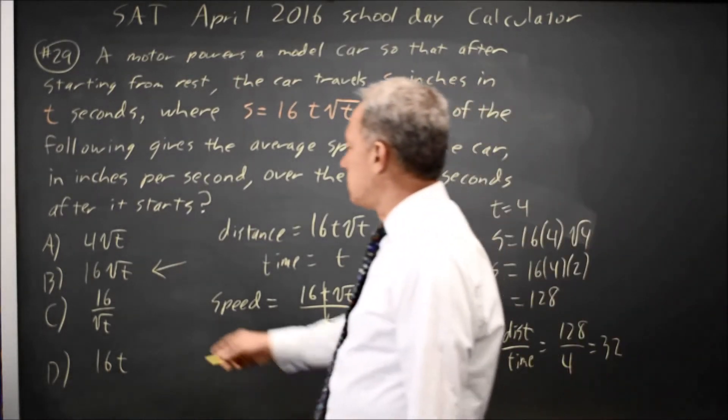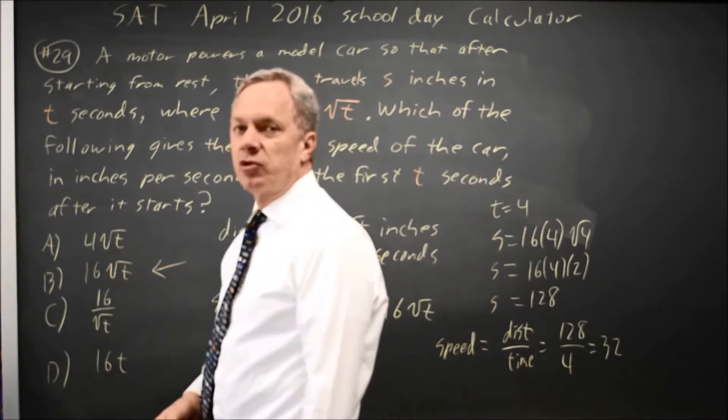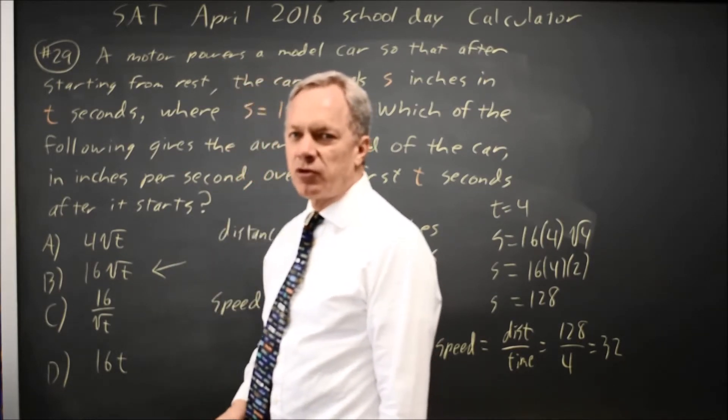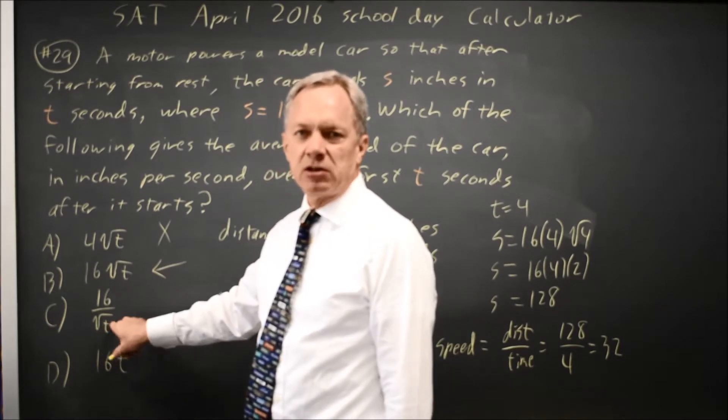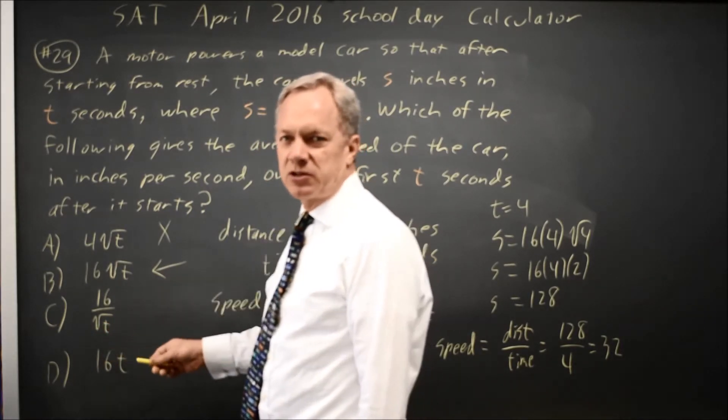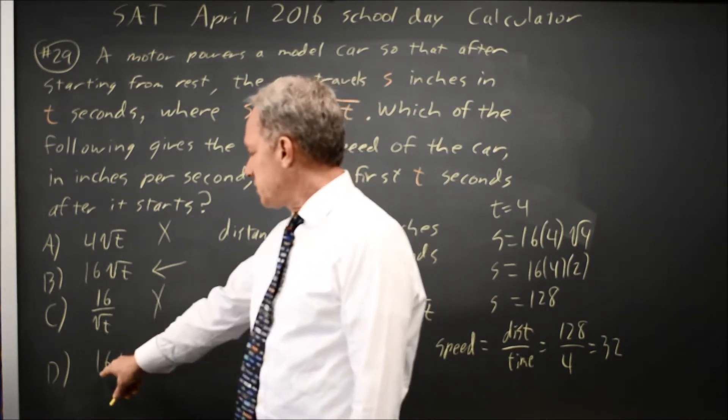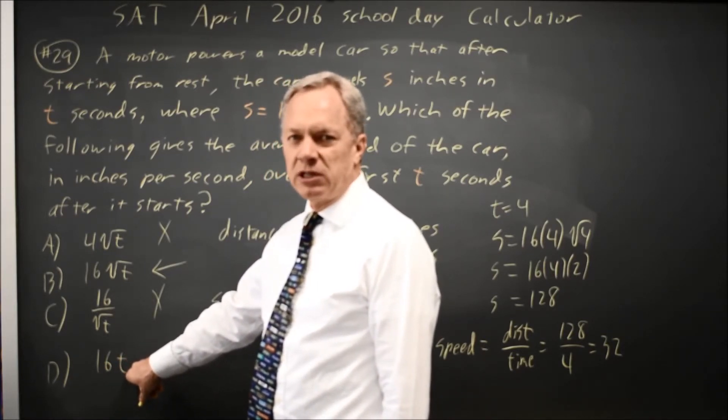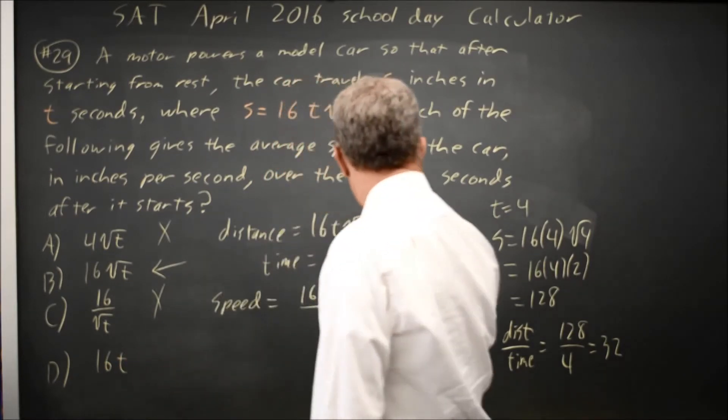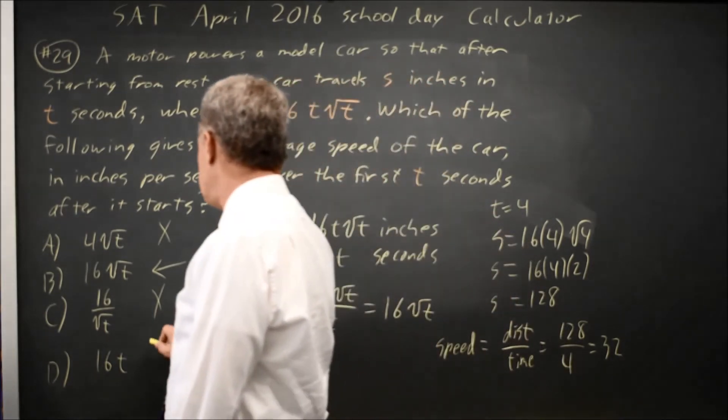Trying these, 4√2 is 4 times the square root of 4, which is 4 times 2 is 8, that doesn't work. 16 over √2 is 16 over 2 is also 8, still doesn't work. And 16 times t is 16 times 4 is 64, but I got 32 here, so that's not right.